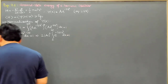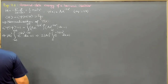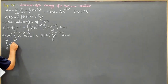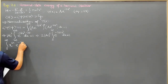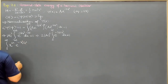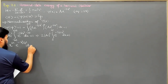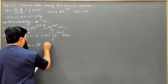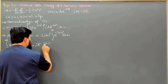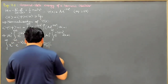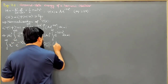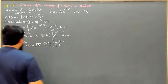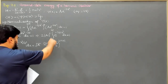We will use the standard formula: the integral from 0 to infinity of x to the power 2n times e to the power minus x squared over a squared dx equals square root of pi times a to the power 2n plus 1 over 2 times n factorial over 2. This is the formula we will apply to our integration.